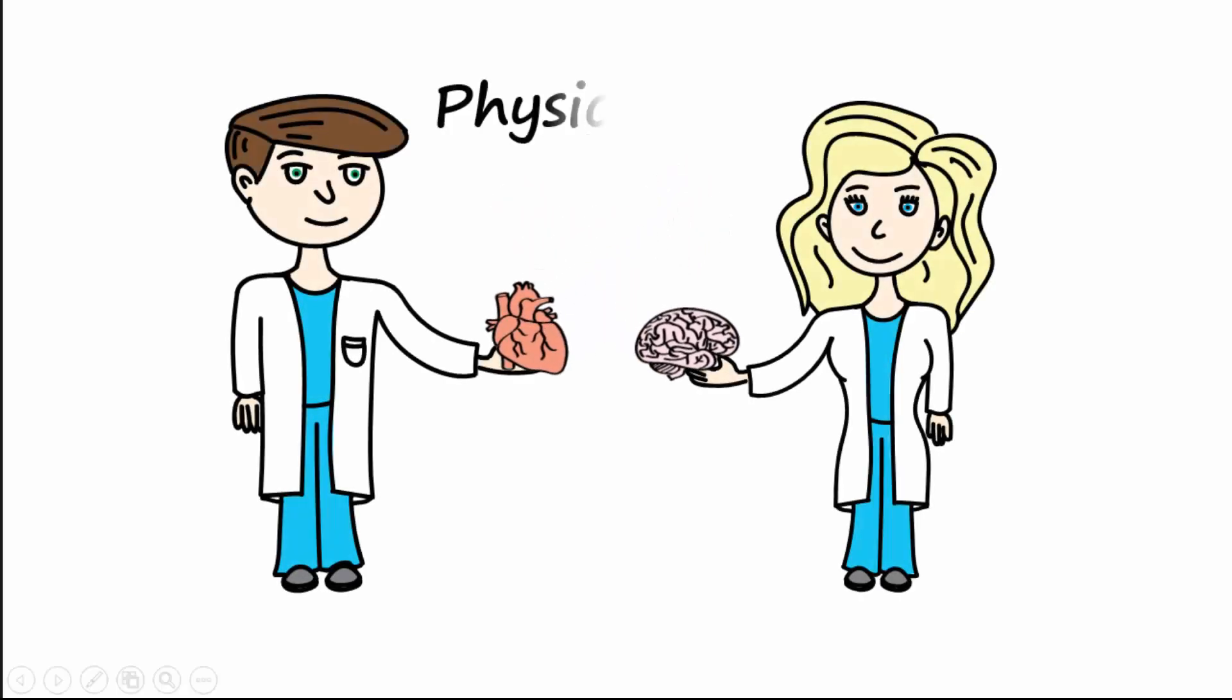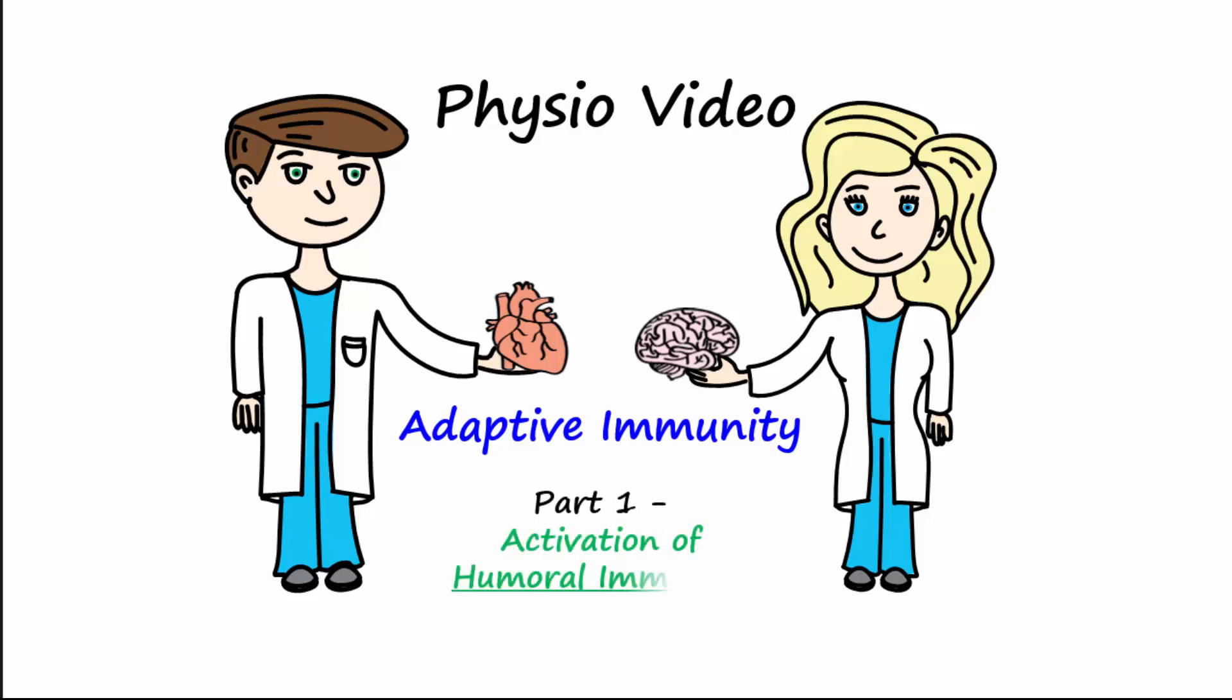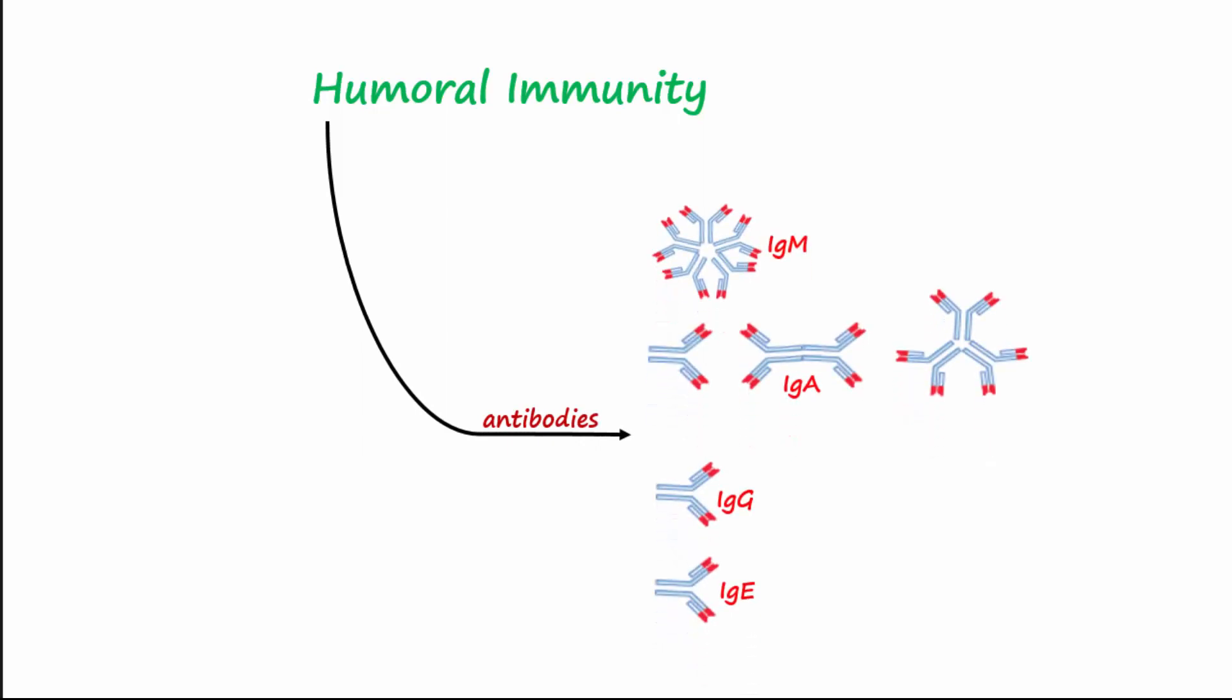Welcome to another physio video. This is part one of a two video series on adaptive immunity. In this video we discuss the activation of humoral immunity. Humoral immunity refers to the production of antibodies which play an important role in fighting infections. Let's discuss the process by which antibodies against a specific antigen are produced.